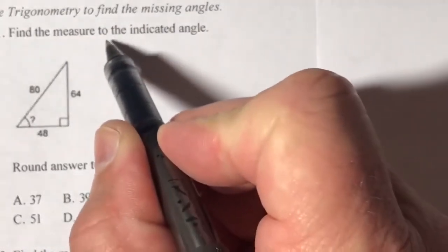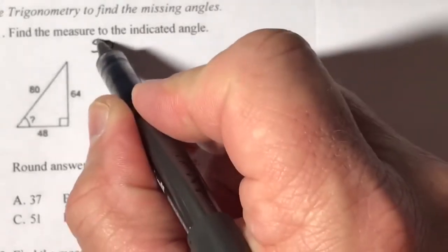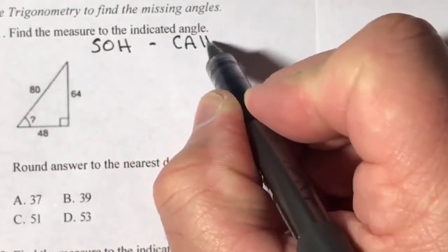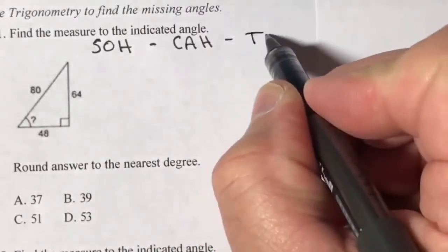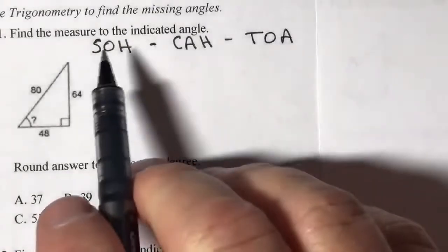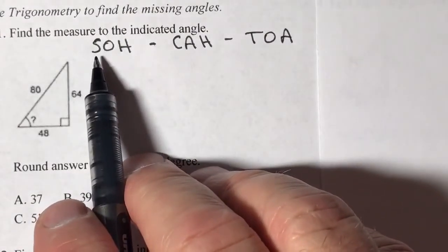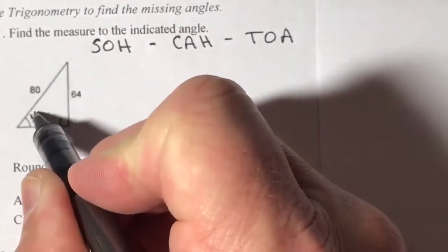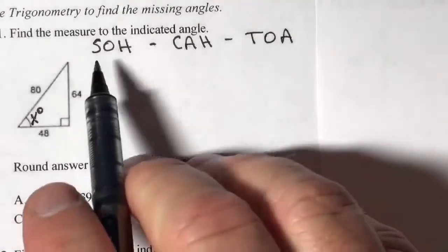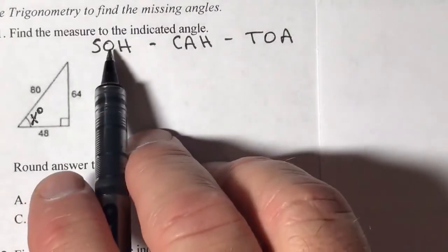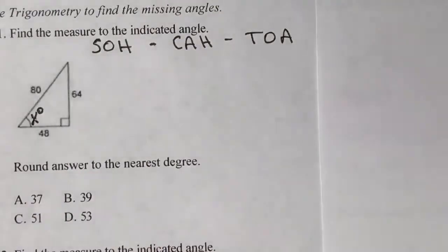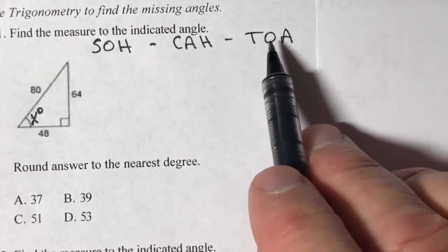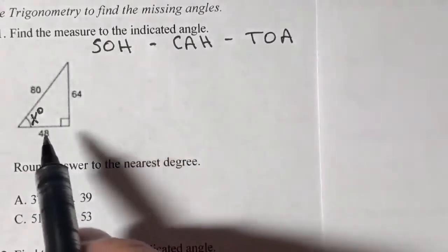I want you to use this acronym called SOHCAHTOA — S-O-H, C-A-H, T-O-A. This stands for: sine of x degrees is equal to the opposite over the hypotenuse; cosine is equal to adjacent over the hypotenuse; and tangent is equal to opposite over adjacent.